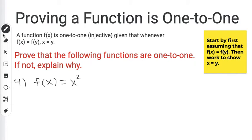Now for this one, I have f(x) equals x squared. So we're going to start off with our proof. We're going to assume that f(x) equals f(y).